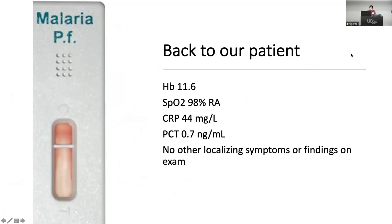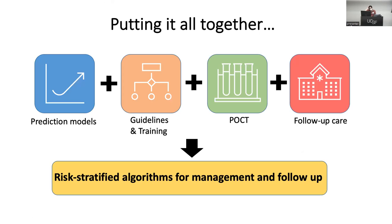Back to our patient: let's say you now have a hemoglobin, pulse oximetry, CRP, and procalcitonin and no other localizing symptoms — maybe now you feel more comfortable sending this kid home, maybe with some form of structured follow-up. Putting it all together: prediction models, incorporating new guidelines, training people specifically to evaluate pediatric patients, using point-of-care testing, and stratifying patients for risk-stratified algorithms for management and follow-up.